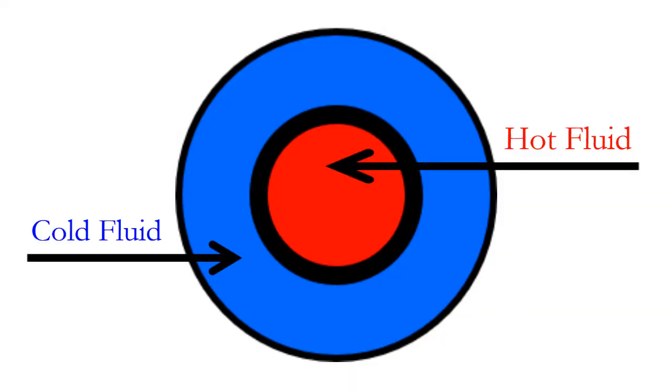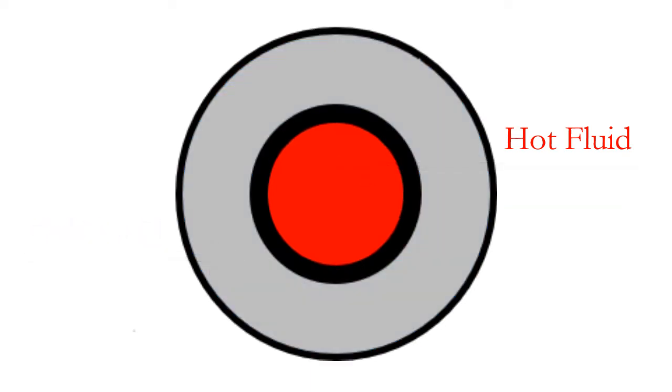Let's consider the areas through which the hot and cold fluids are passing. The area for hot fluid flow is the cross-sectional area of the inner pipe. This is simply the area of a circle with a diameter equal to the inside diameter of the inner pipe.